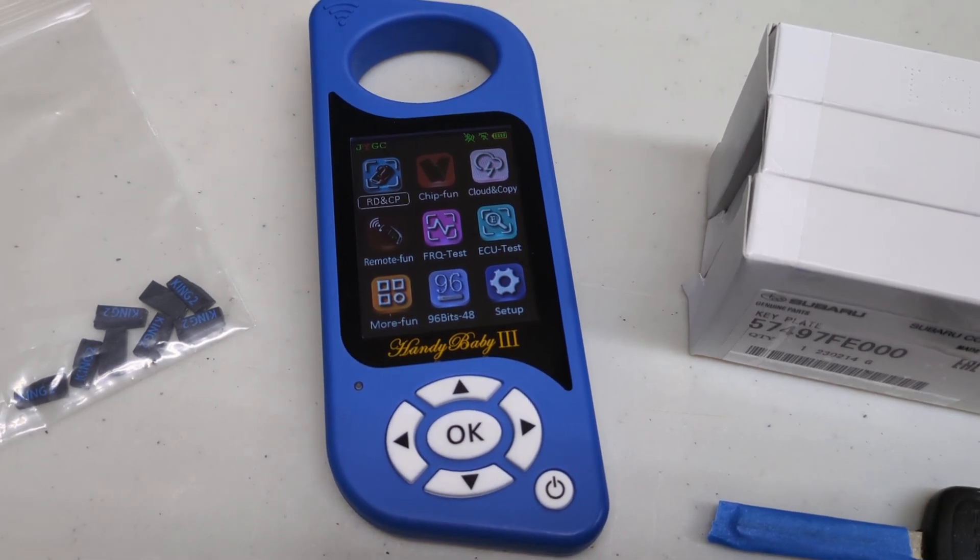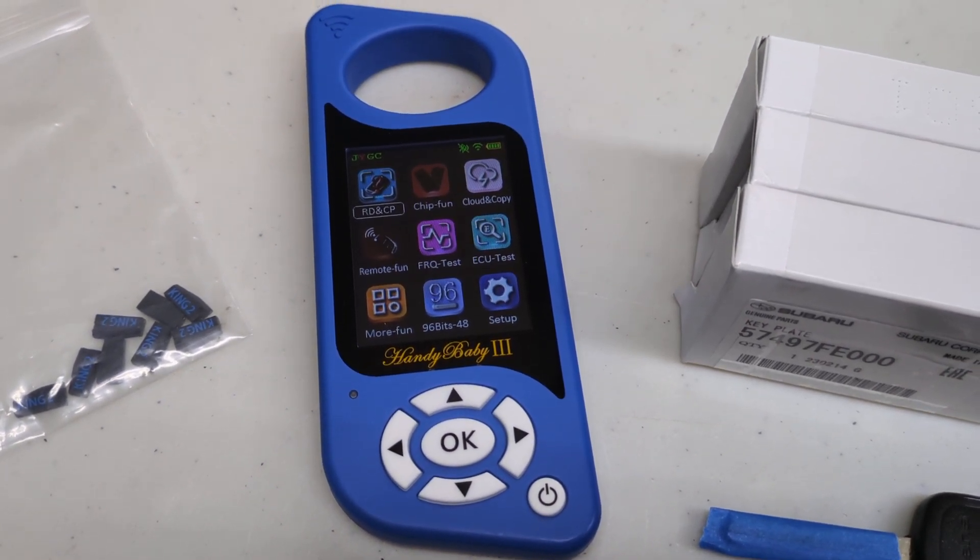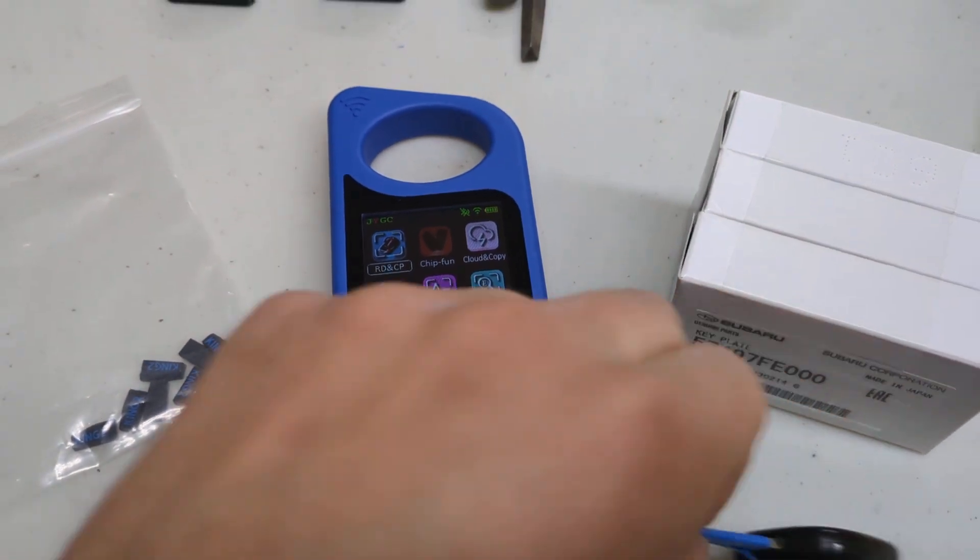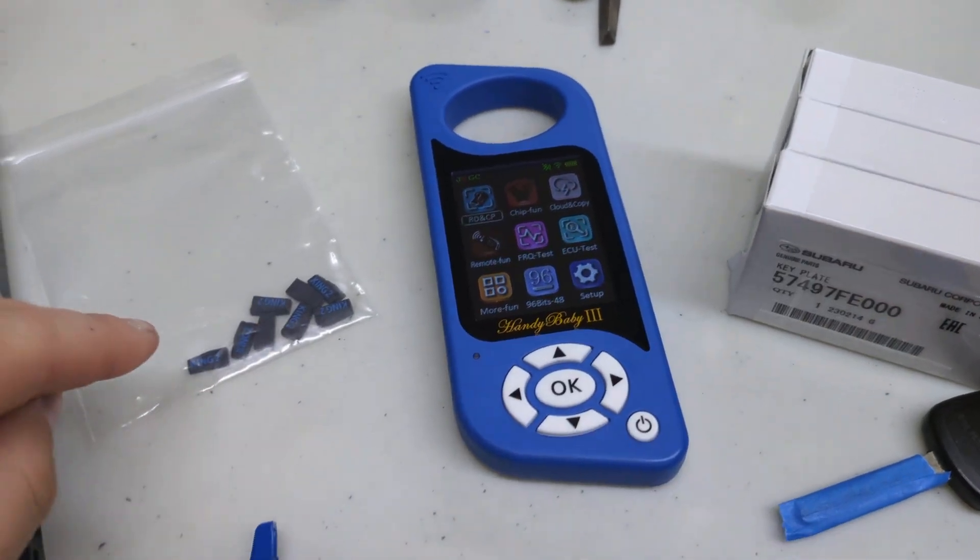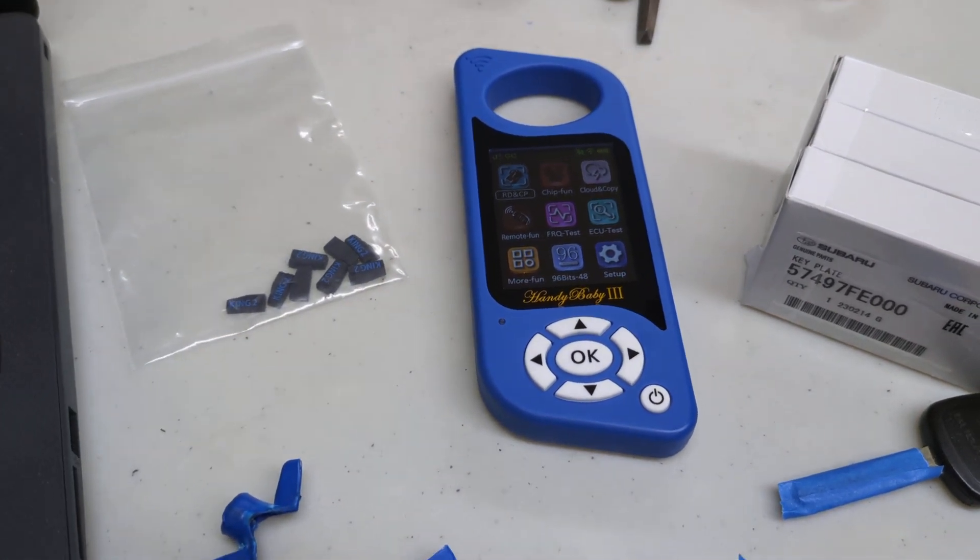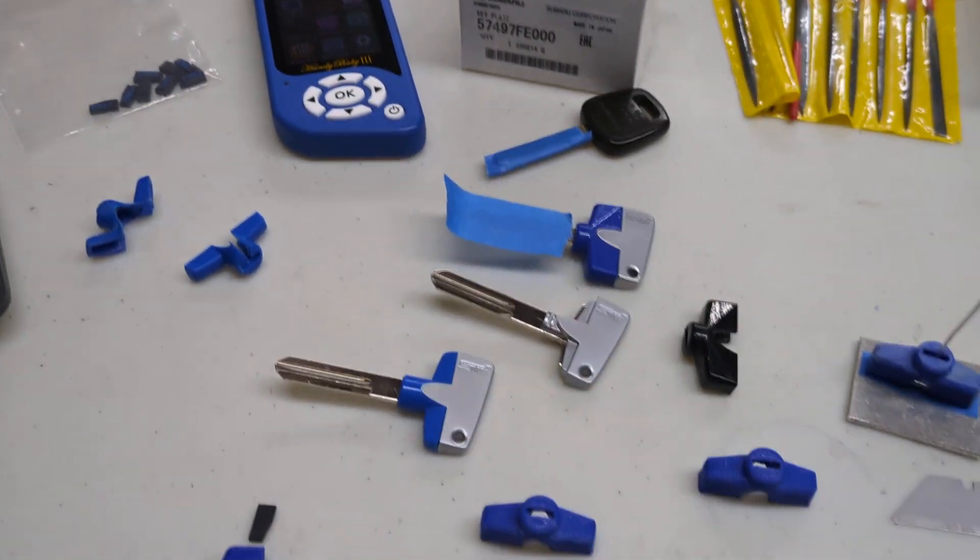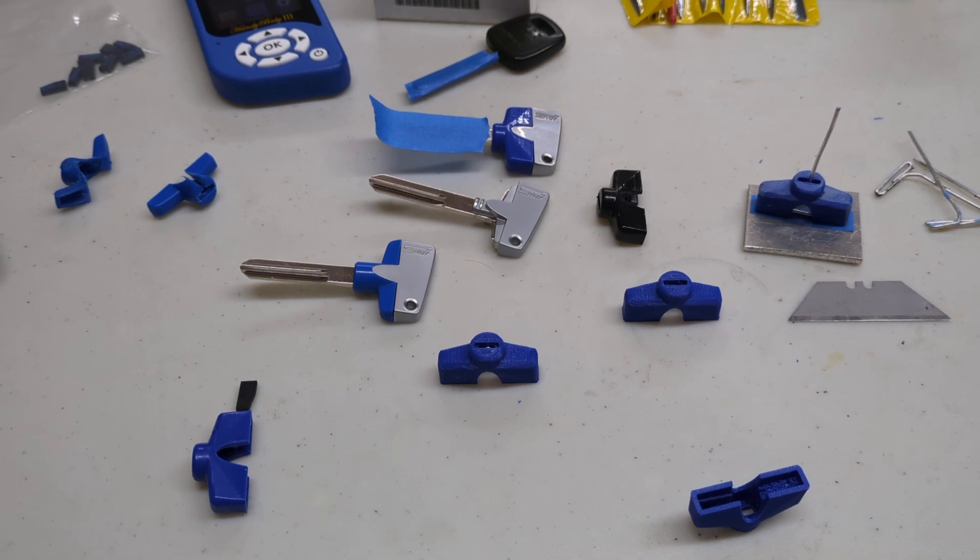It's real easy to use. Just use that RD and CP at the top. You kind of hold the factory key in here and it will read it. And then after you read it, you can hold the chip in there and you can tell it to copy as many as you want. So I did that and it works in my car.